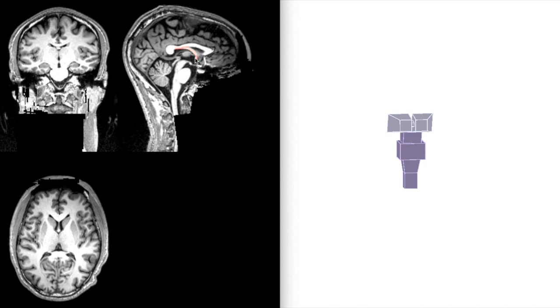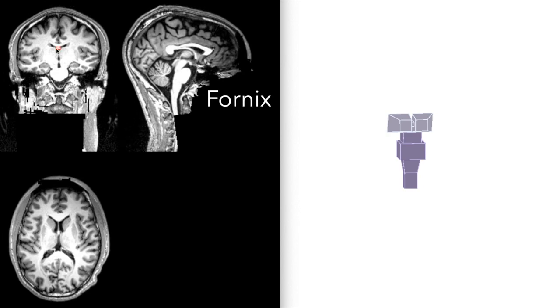Just above the third ventricle lies this line of white matter here. This is called the fornix. And there it is on the coronal plane.